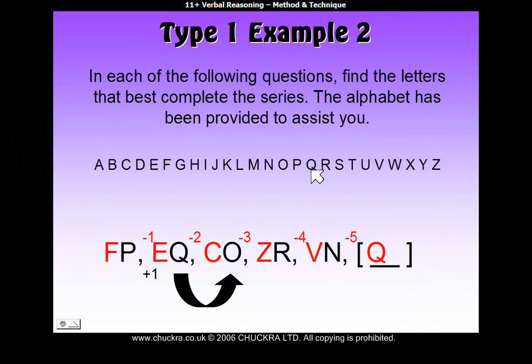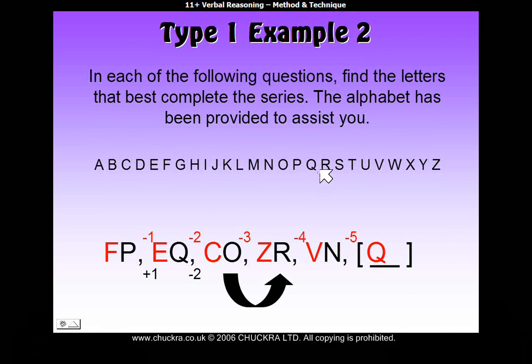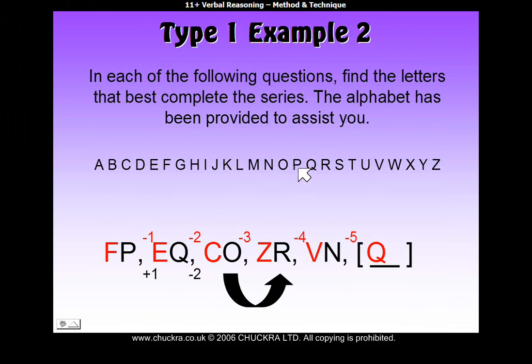From Q to O, well, from Q to O, that's actually backwards one, two. So, backwards two, we could put it down as minus two. Then, from O to R, from O to get to R, is forwards one, two, three. So, plus three.